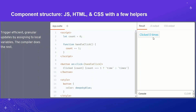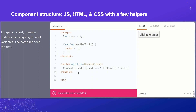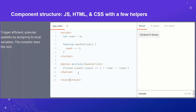Every time the user clicks the button, our count is increased by one because handleClick is called, and the contents of the button immediately react to that and show the updated state.